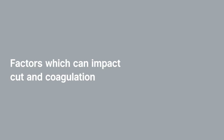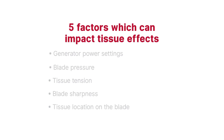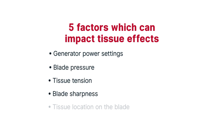There are five factors which can impact tissue effects with ultrasonic devices. Increasing or decreasing these settings influences the balance of coagulation and cut: generator power settings, blade pressure, tissue tension, blade sharpness, and tissue location on the blade.